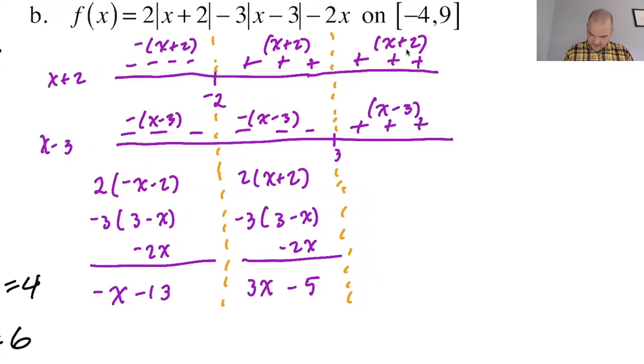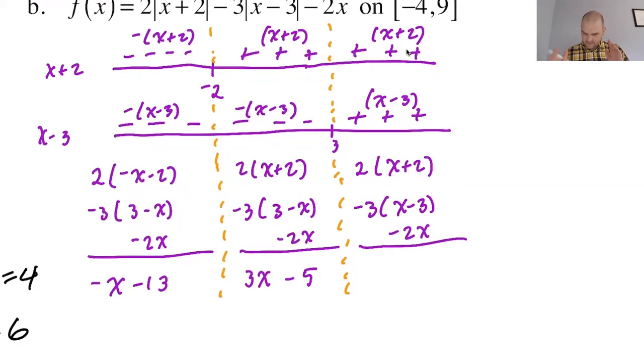And then here, this one's a little easier, potentially. 2 times x plus 2 minus 3 times x minus 3 and then just subtract 2x. 2x minus 3x is negative x minus 2x is negative 3x. And then 4 plus 9 is 13 plus 13.